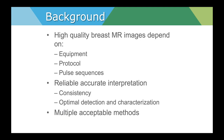MRI is probably the most sensitive test we have for breast cancer, but getting quality images really depends on the equipment that we have, the protocol we choose, and the pulse sequences that we design. A reliable and accurate interpretation of images is enhanced by consistency — both in the acquisition of the images and consistency in the way we read them. This will allow us to really optimize detection and characterization of any finding. There are many acceptable methods to do this, with some basic parameters that everybody uses as a foundation.